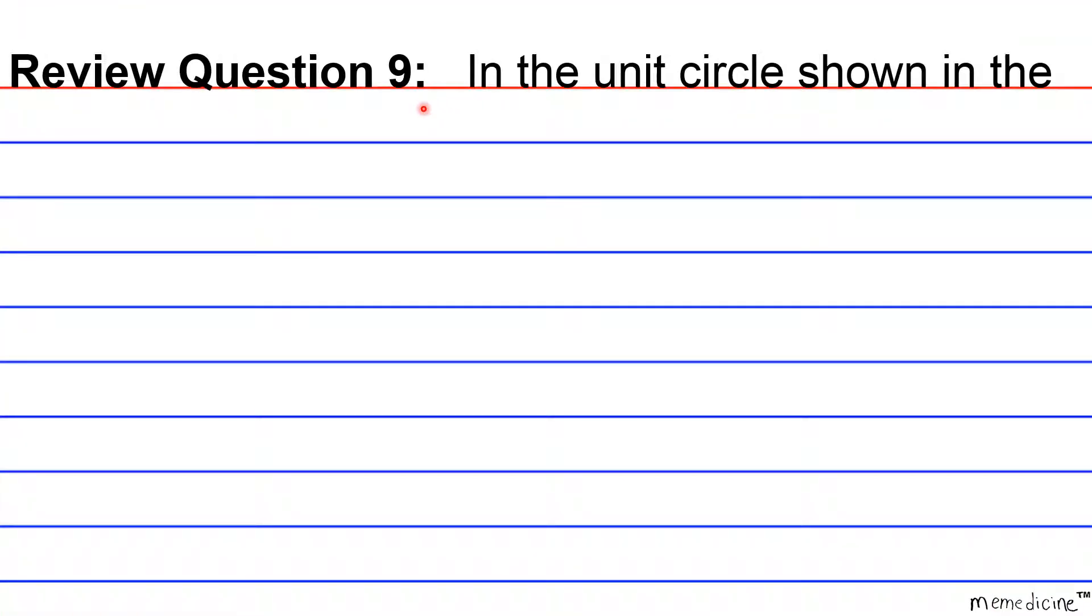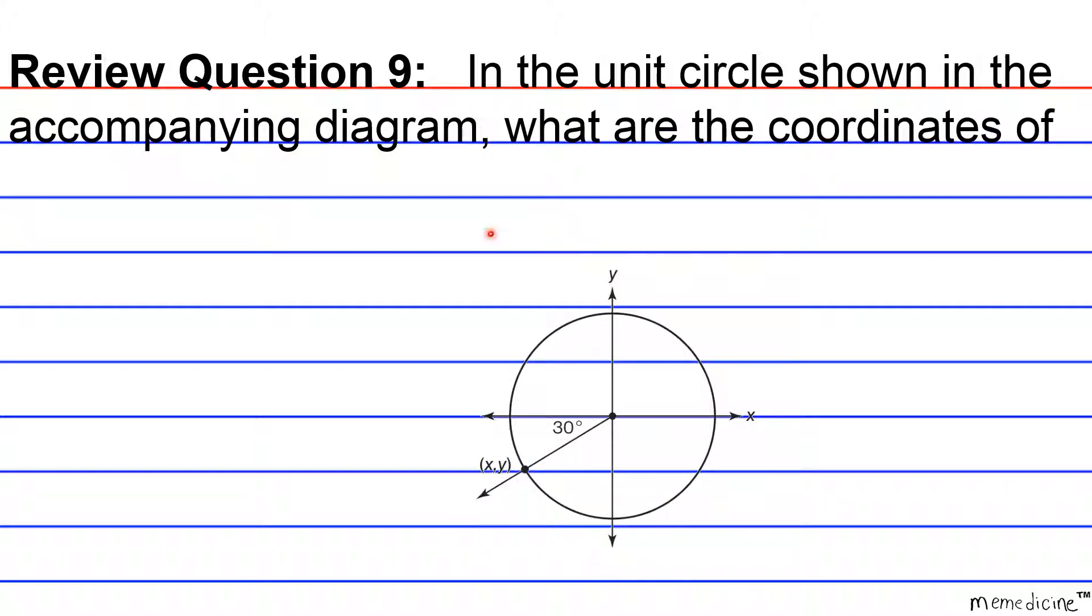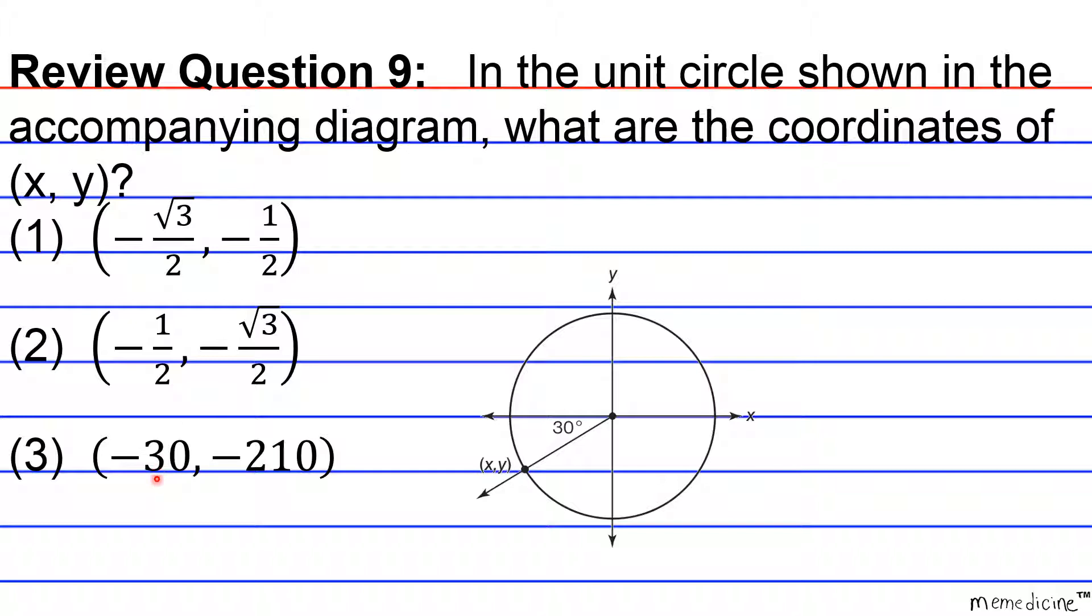Review Question 9: In the unit circle shown in the accompanying diagram, what are the coordinates of (x, y)? Is it going to be 1, negative radical 3 over 2 and negative 1 over 2? Is it going to be 2, negative 1 over 2 and negative radical 3 over 2? Is it going to be 3, negative 30 and negative 210? Or is it going to be 4, negative radical 2 over 2 and negative radical 2 over 2?